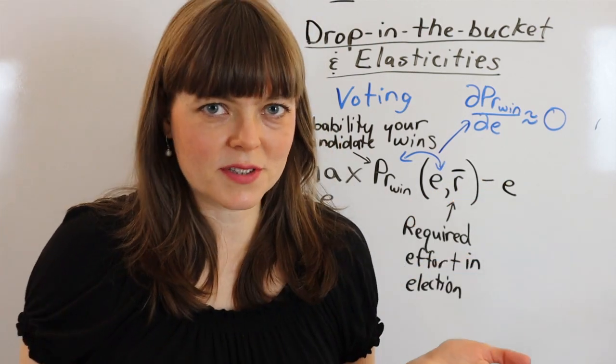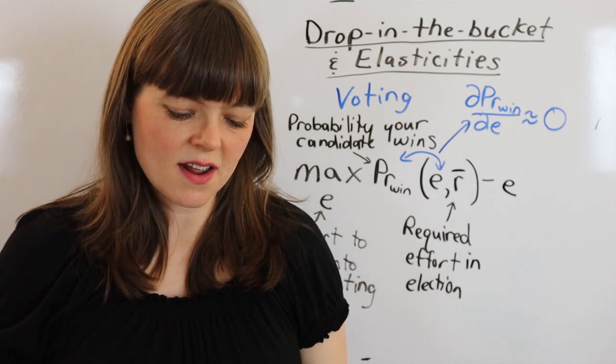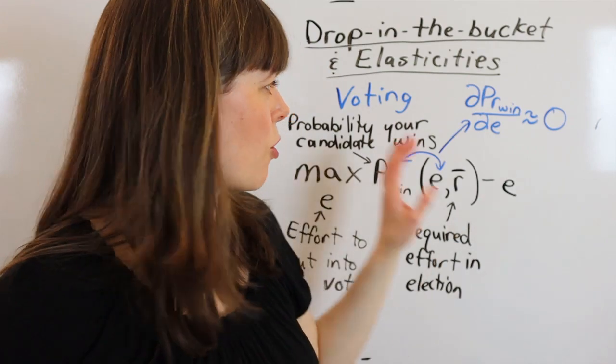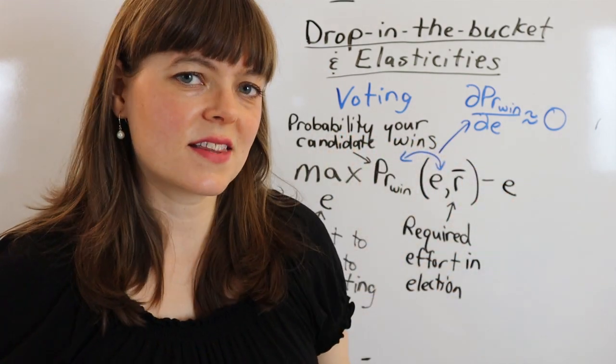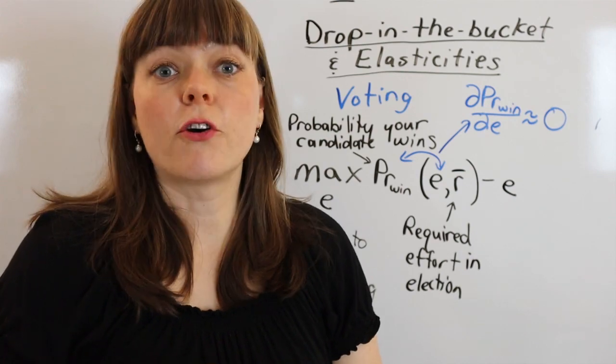But we know that people do vote, so what is going on? Given that your one vote is unlikely to count but people actually go in to vote, how do we even explain that behavior? What do we need to add to this objective function to make it match people's real-world voting motivations?